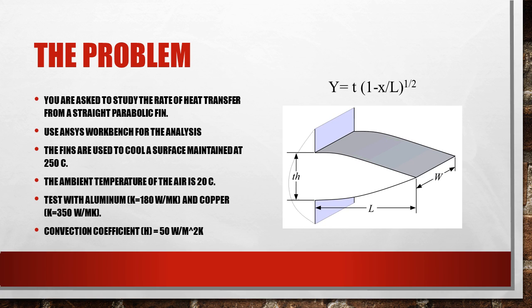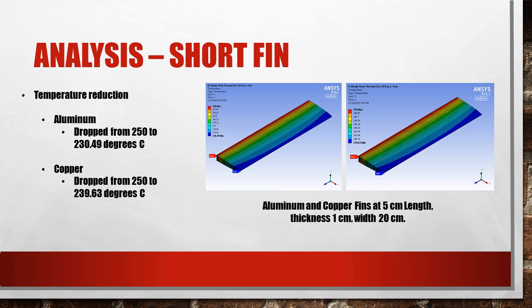The ambient temperature of the air is 20 degrees Celsius. We first tested aluminum with a conductivity of 180, then copper with a conductivity of 350. The convection coefficient was 50.